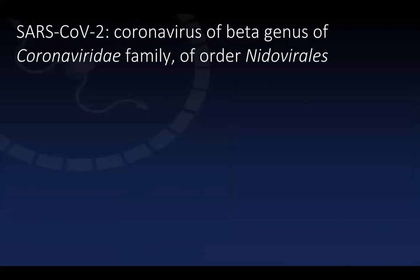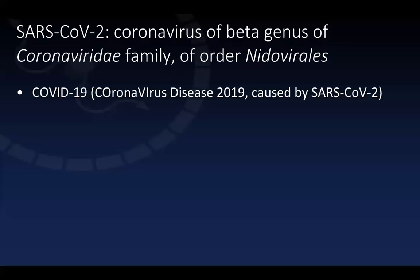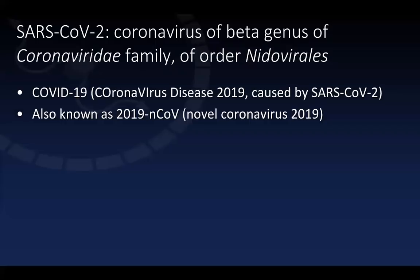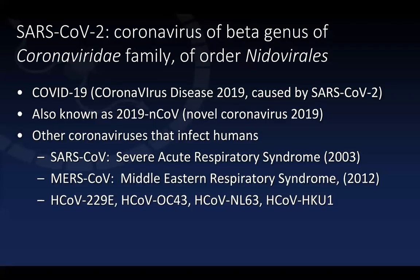The virus itself is called SARS-CoV-2, or the coronavirus, a beta genus of the Coronaviridae family of the order Nidovirales. The disease itself is called COVID-19, coronavirus disease 2019, caused by the SARS-CoV-2 virus, previously also known as 2019 novel coronavirus. There are multiple other coronavirus strains that infect humans — we saw the emergence of SARS in 2003, the original SARS-1, and Middle Eastern respiratory syndrome in 2012, as well as strains circulating that give rise to seasonal upper respiratory infections.